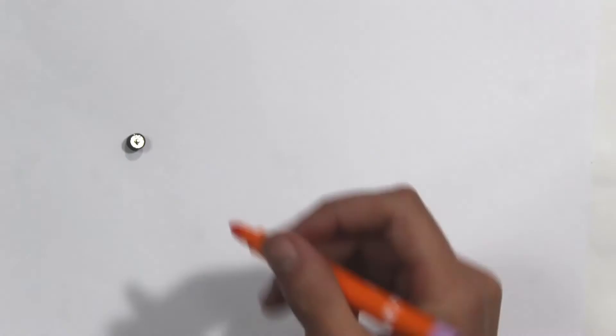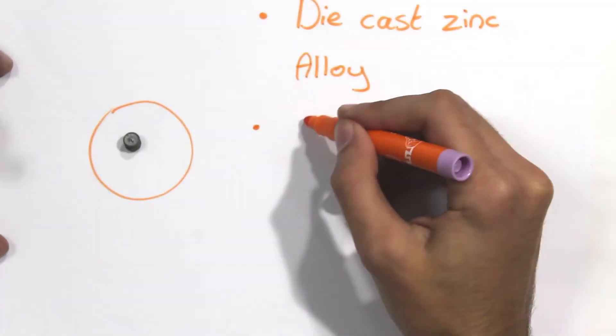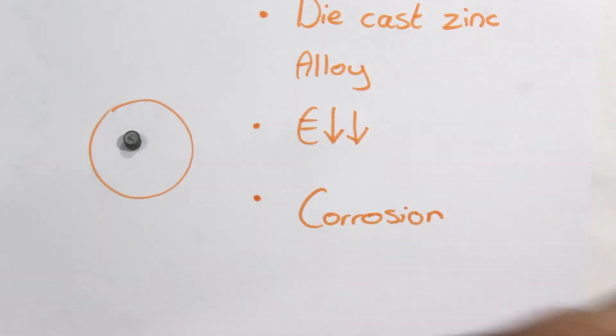The striker wheel. This is made of die-cast zinc alloy. It is a low cost material and corrosion resistant, very important and practical for a lighter's use.